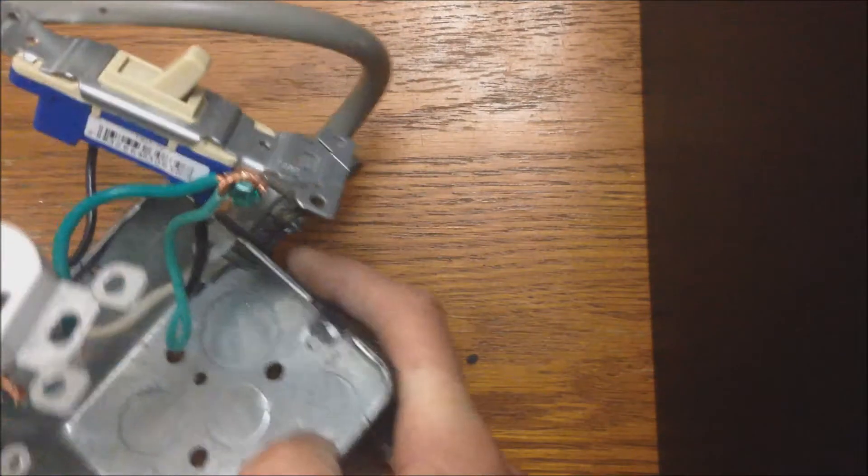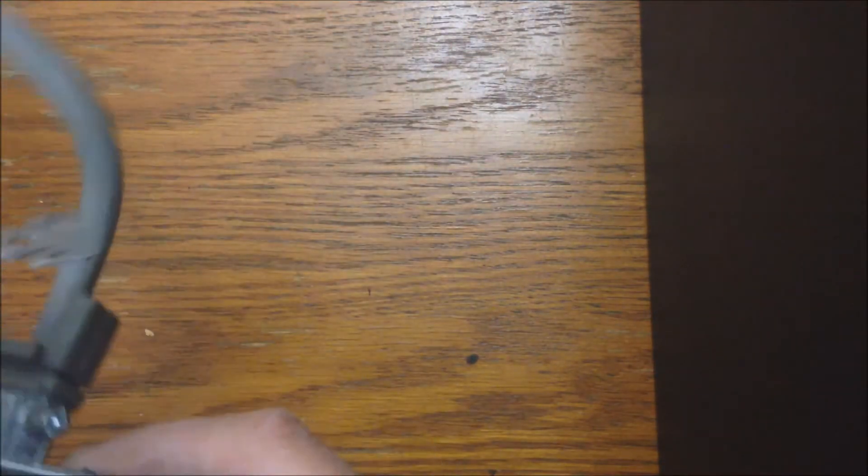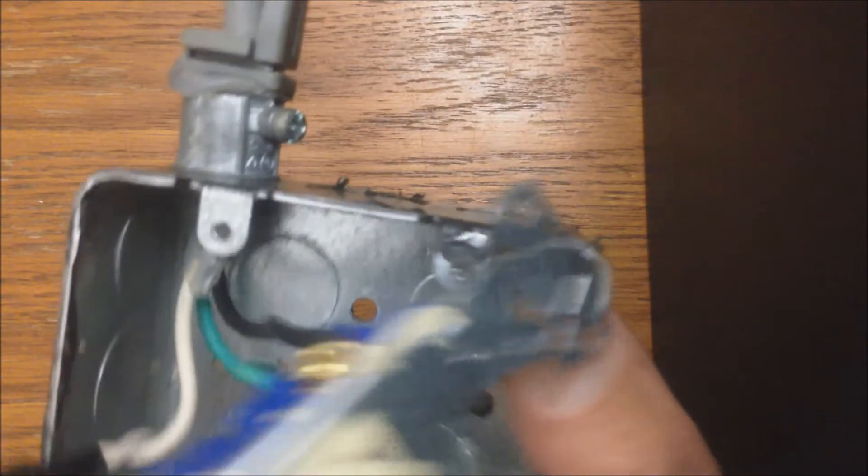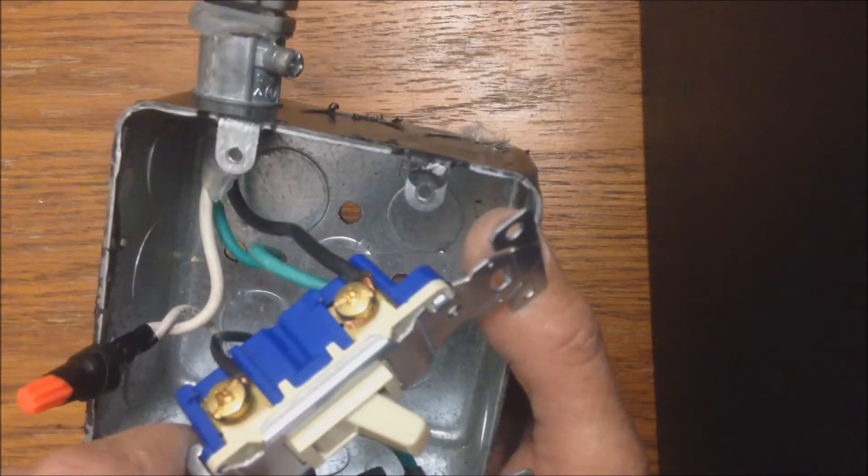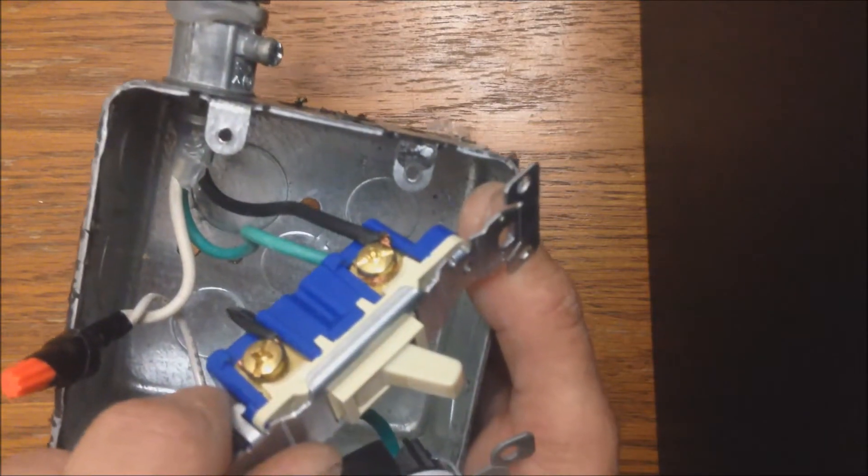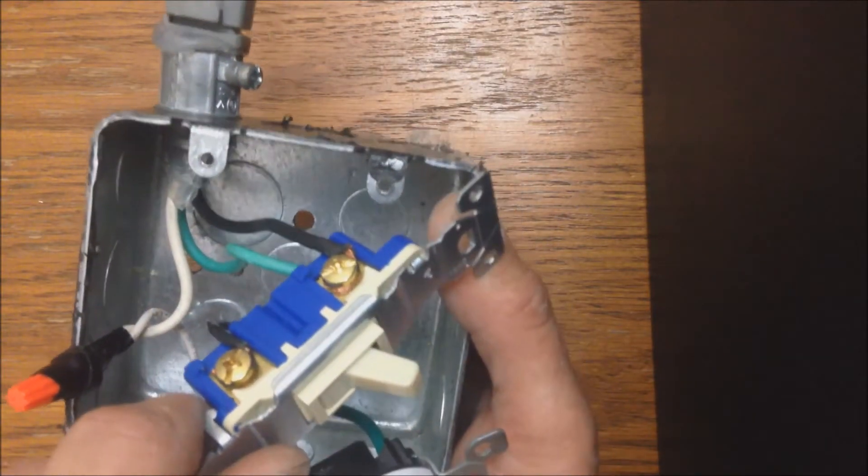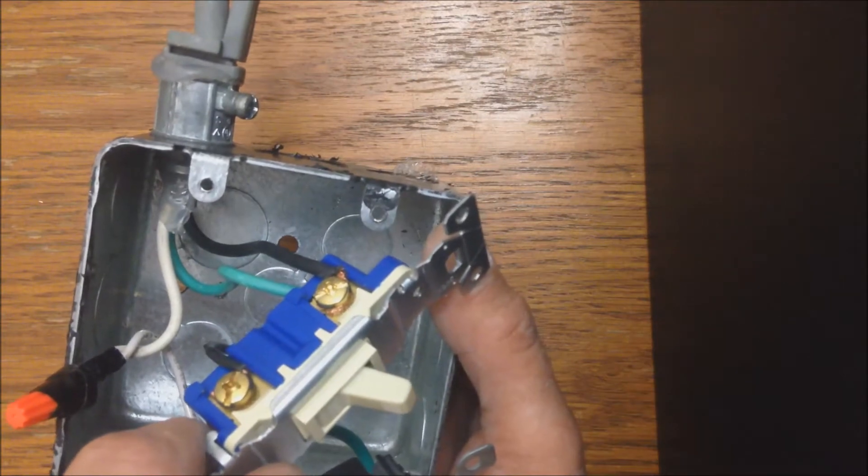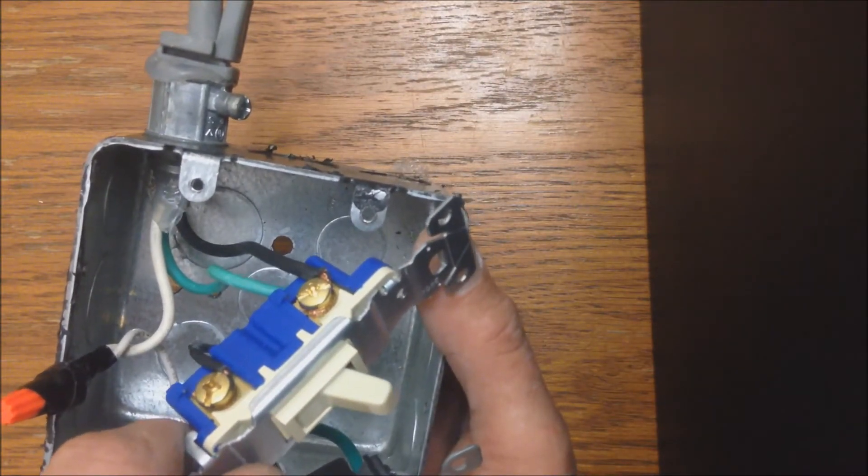So what we have here is just a standard power cord coming in, stolen from the microwave of course, coming into the box and then power goes into the bottom of the switch and then comes out the top.